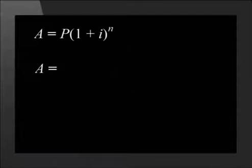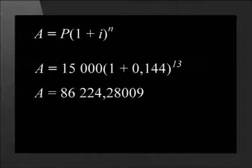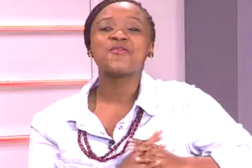Using the formula we see that A equals 15,000 times (1 plus 0.144) to the power of 13. This gives us an answer of 86,224.28. This means that Michelle's grandma will be able to give her a gift of 86,244 rand and 28 cents. Wow grandma, thanks. Let's have a look at some more examples using the compound interest formula.